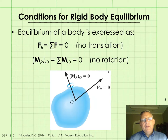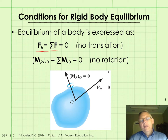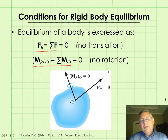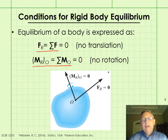In a previous lecture, we established that a system of forces and moments acting on a body can be reduced to a single resultant force by summing all the forces, and a single resultant moment about any arbitrary point O that can be on or off the body. That resultant moment is the sum of the free moments or couple moments acting on the body, as well as the couple moments created when the forces are moved to point O.